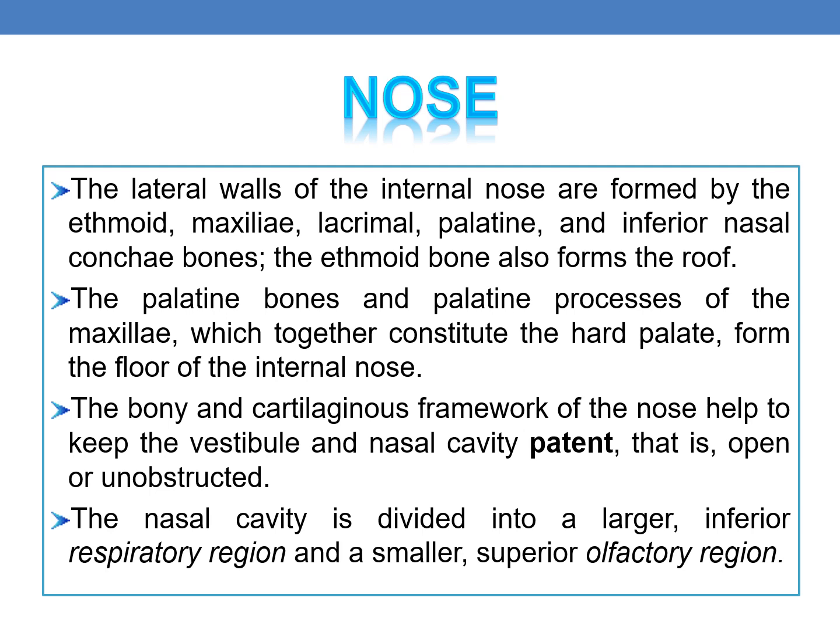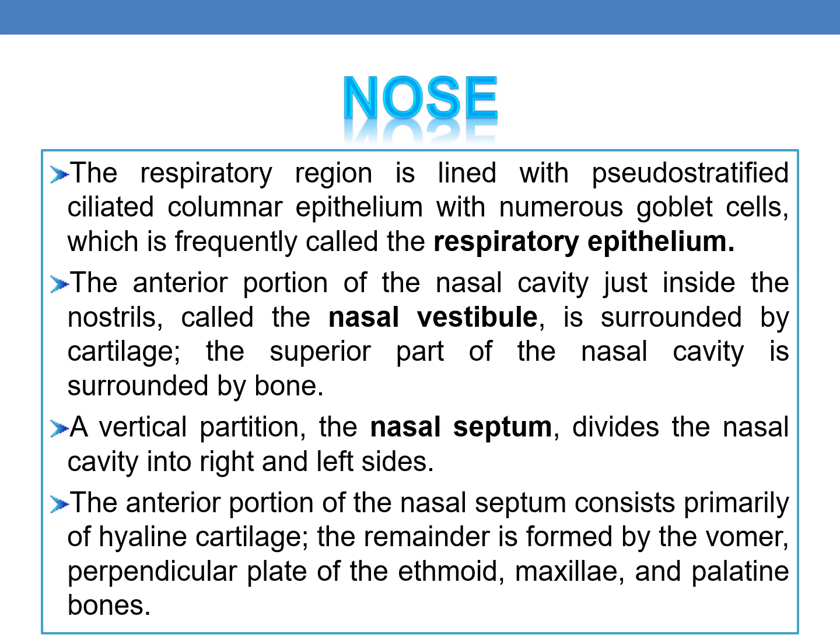The bony and cartilaginous framework of the nose helps to keep the vestibule and nasal cavity patent — that is, open or unobstructed. The nasal cavity is divided into a larger inferior respiratory region and a smaller superior olfactory region. The respiratory region is lined with pseudostratified ciliated columnar epithelium with numerous goblet cells, frequently called the respiratory epithelium. The anterior portion of the nasal cavity just inside the nostrils is called the nasal vestibule, which is surrounded by cartilage.